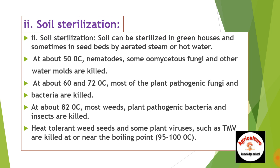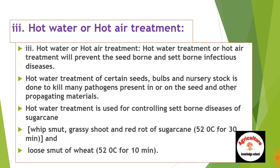In soil solarization we use a transparent sheet, in soil sterilization we can use greenhouses and hot water. Hot water and hot air treatment will prevent seed-borne and shed-borne infectious diseases. Hot water treatment of certain seeds, bulbs, and nursery stalks is done to kill many pathogens present in or on the seed and other propagating materials.